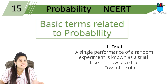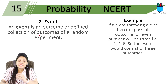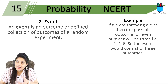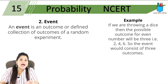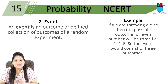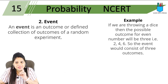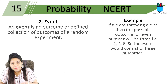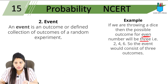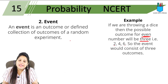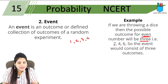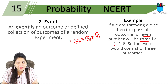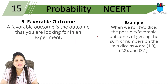A dice throw is a trial — 1, 2, 3, 4, 5, or 6 will come. Next: what is an event? An event is an outcome or a defined collection of outcomes of a random experiment. If we throw a dice, the possible outcomes for an even number will be 3, because they are 2, 4, and 6. A dice can show 1, 2, 3, 4, 5, or 6 — nothing else. So the even numbers are 2, 4, 6.